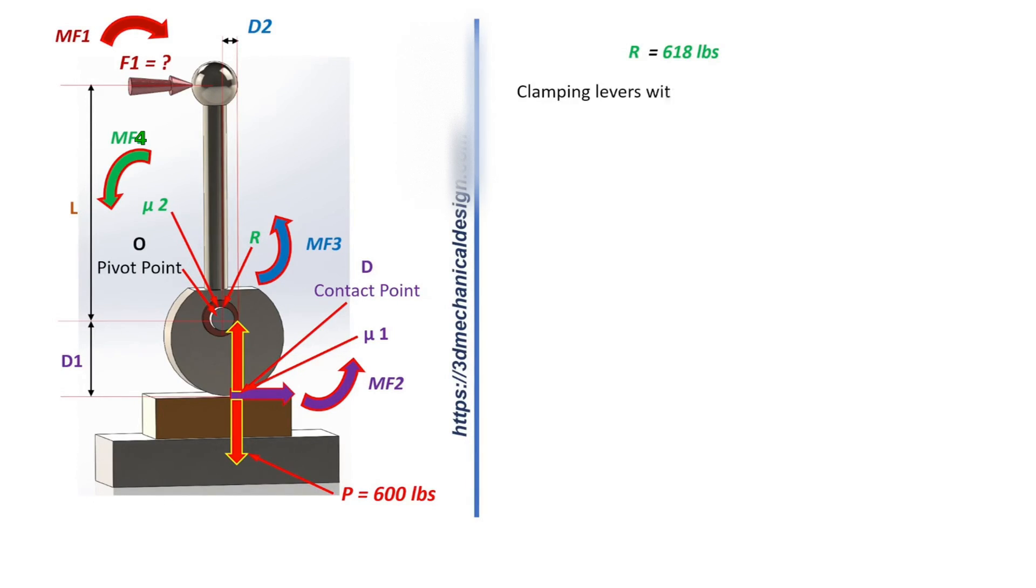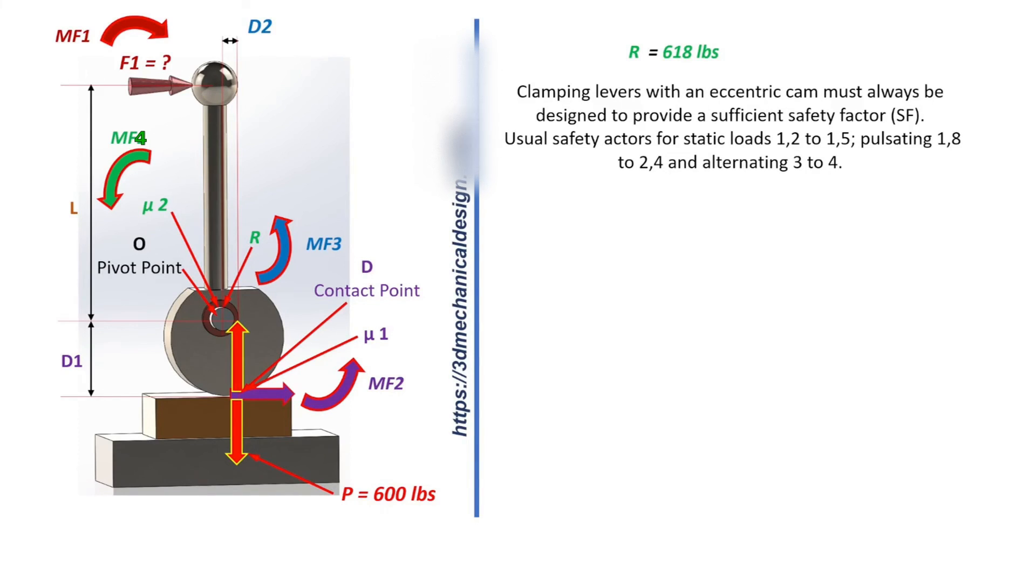Clamping levers with an eccentric cam must always be designed to provide a sufficient safety factor (SF). Usual safety factors for static loads: 1.02 to 1.05, pulsating 1.8 to 2.4, and alternating 3 to 4. Static load = 1.5.